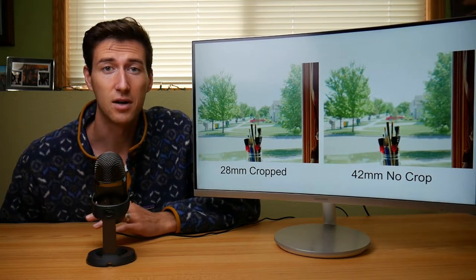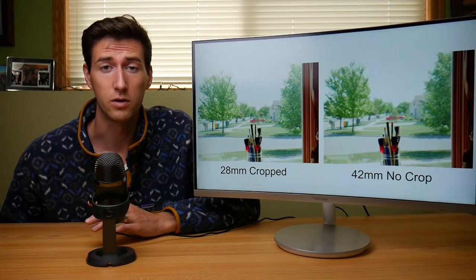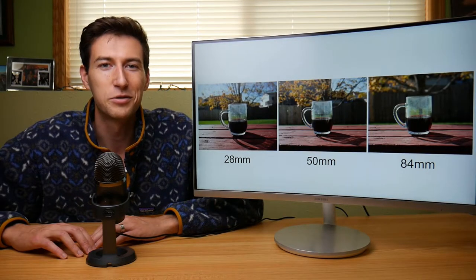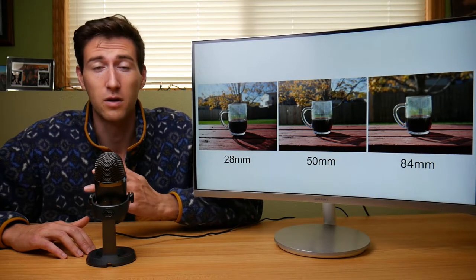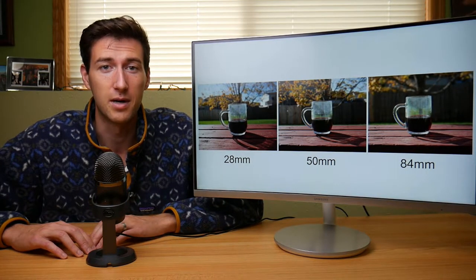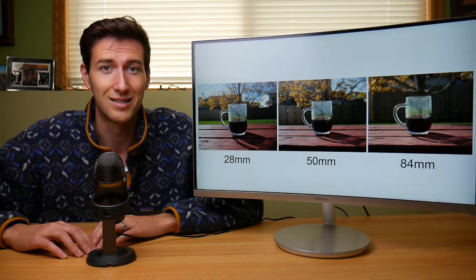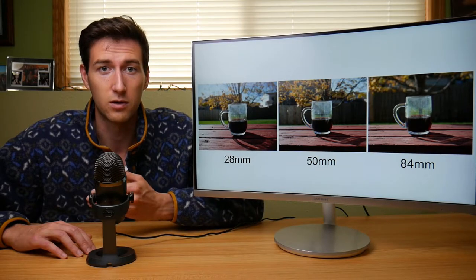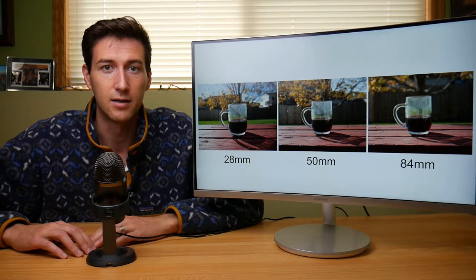Now let's talk about moving closer to or farther away from your subject. These three images show the effects of that movement. You'll notice the subject is the same size in each image even though I used different focal lengths — I achieved this by moving farther away when using the more magnified, higher focal lengths.